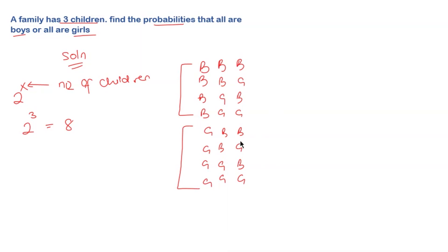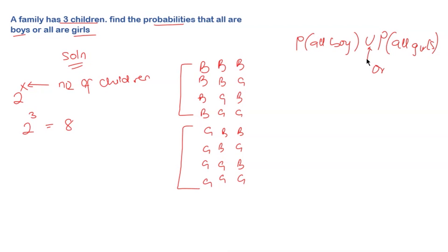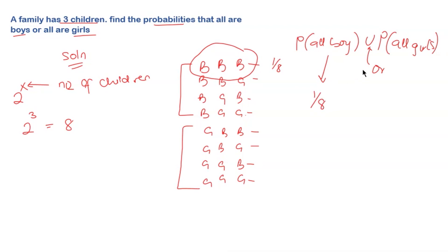We need to find the probability that all are boys or all are girls. Since 'or' represents union, which means addition, and each outcome has a probability of 1 over 8, we look at how many ways all are boys — that's just one: boy, boy, boy. So the probability that all are boys is 1 over 8.